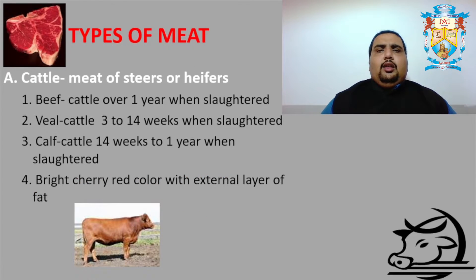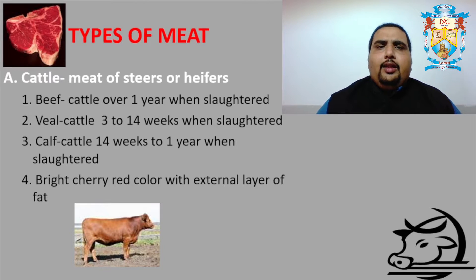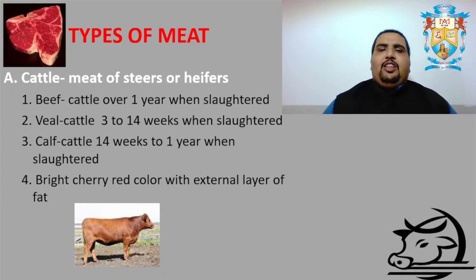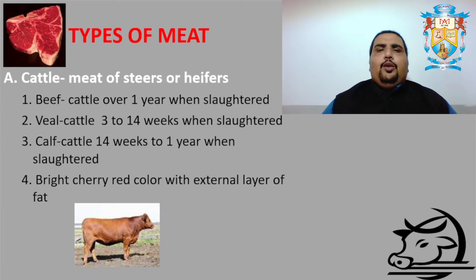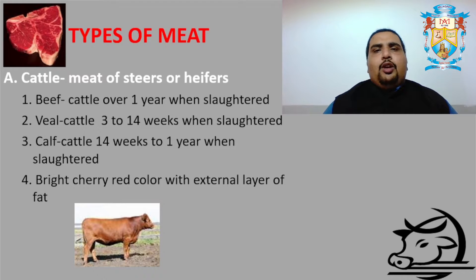First is the cattle meat of steers or heifers — basically four-legged heavy animals like cow, bison, etc. Meat from these animals is classified into different age groups. First we have beef: cattle over one year of age before slaughter. It should be at least one year and above before it is slaughtered — that is beef.